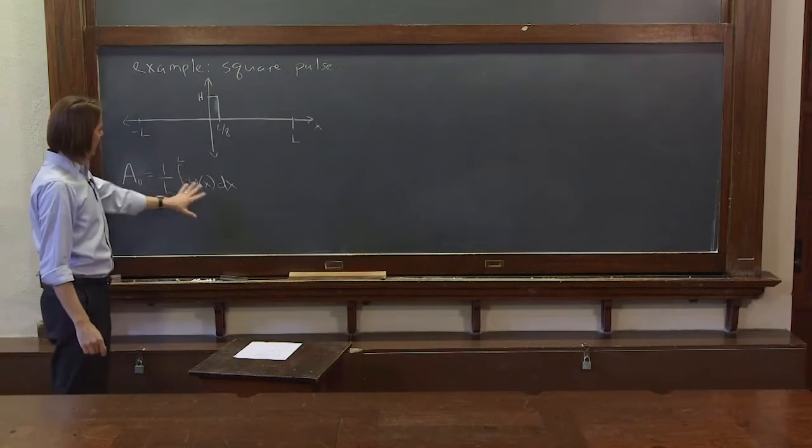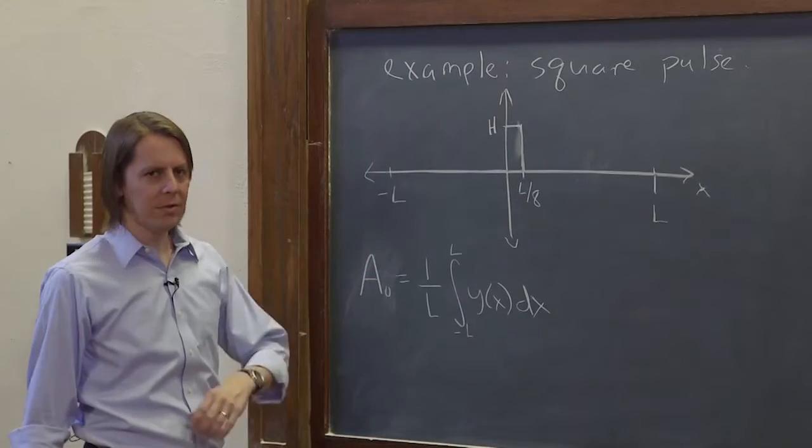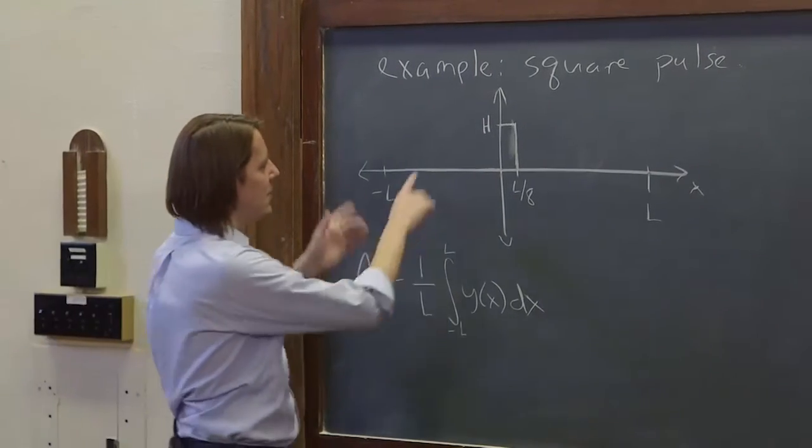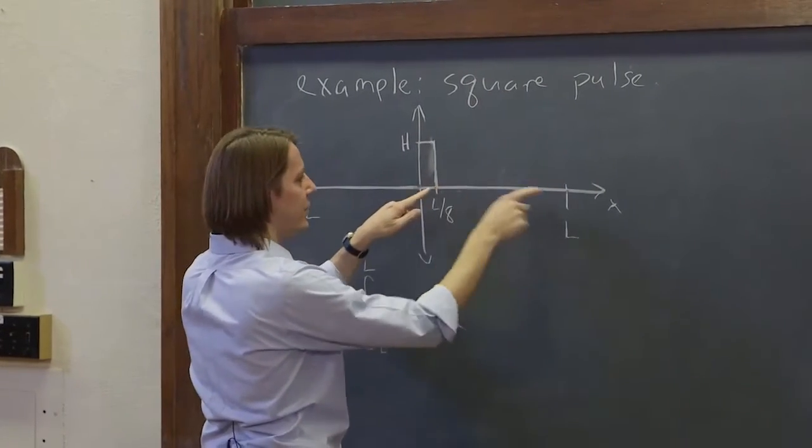But we're in trouble here because this is not an analytic function we can just write down. It's not a line, not a sine, not e to the x. It's this thing that we've defined piecewise. So it's 0 here, and then it's h here, and then it's 0 here.